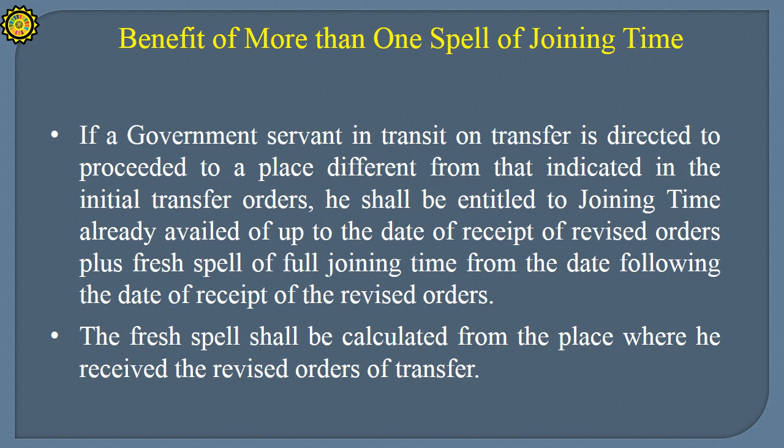Benefit of More Than One Spell of Joining Time: If a government servant in transit on transfer is directed to proceed to a place different from that indicated in the initial transfer orders, he shall be entitled to the joining time already availed up to the date of receipt of revised orders, plus a fresh spell of full joining time from the date following receipt of the revised orders. The fresh spell shall be calculated from the place where he received the revised order of transfer.